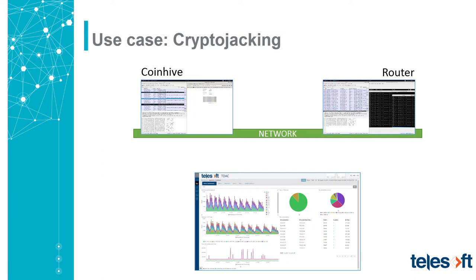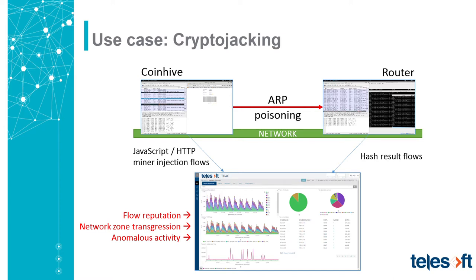Crypto jacking is something we've seen recently. We saw CoinHive and what we found was JavaScript miners being injected over HTTP. We saw cryptographic hash calculation results being moved backwards to the consuming entity, and also some ARP poisoning of a router, with hash result flows coming back. The platform pieced this together by looking at flow reputation, a combination of flow reputation, network zone transgression, and anomalous activity that was too rhythmic to be normal — in an internet traffic profile that is continuously volatile and full of entropy.